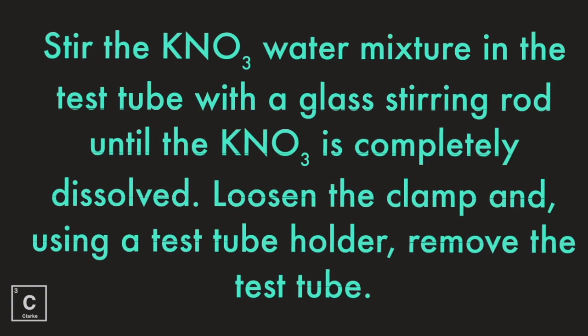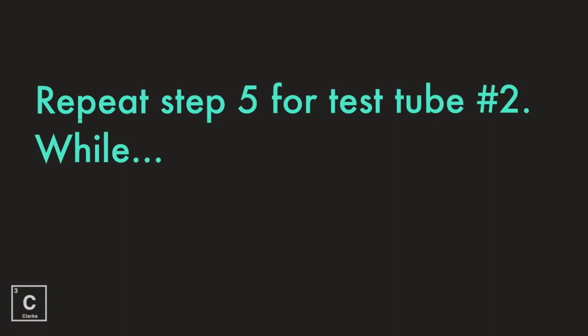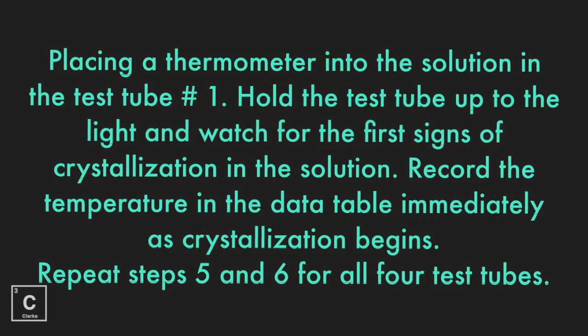While placing the thermometer into the solution in test tube number one, hold the test tube up to the light and watch for the first signs of crystallization in the solution. Record the temperature immediately when you see that — put that in your data table as the crystallization begins. Repeat steps five and six for all four test tubes. Record the temperature in the data table immediately as crystallization begins.